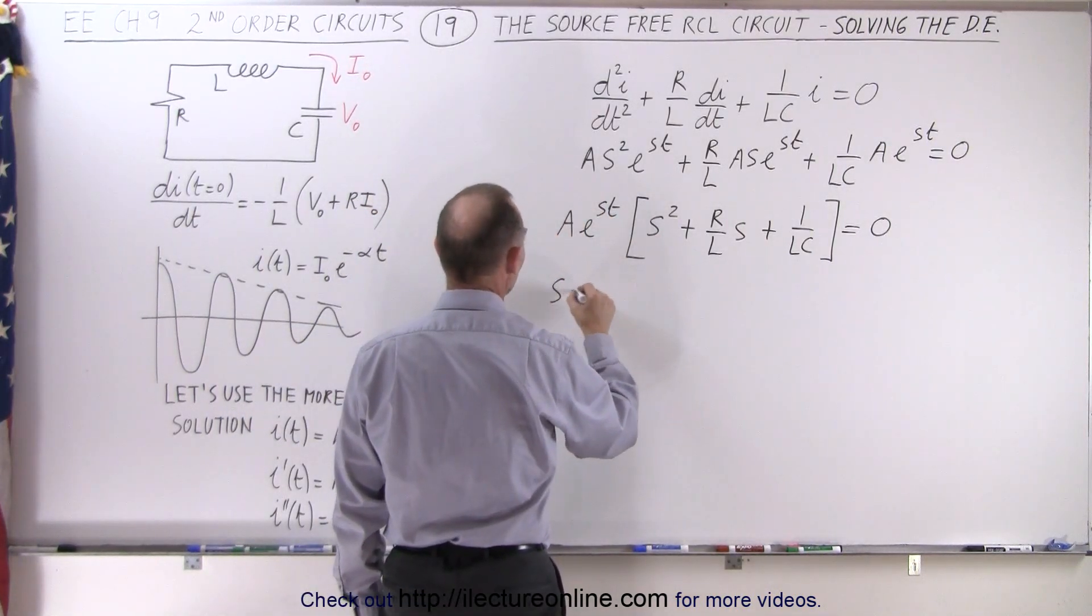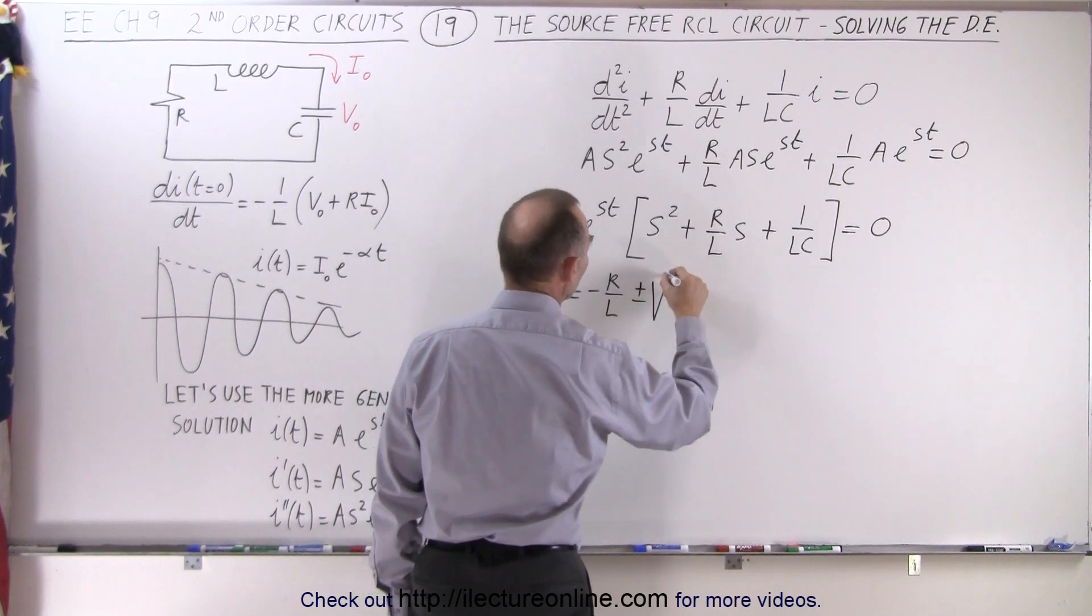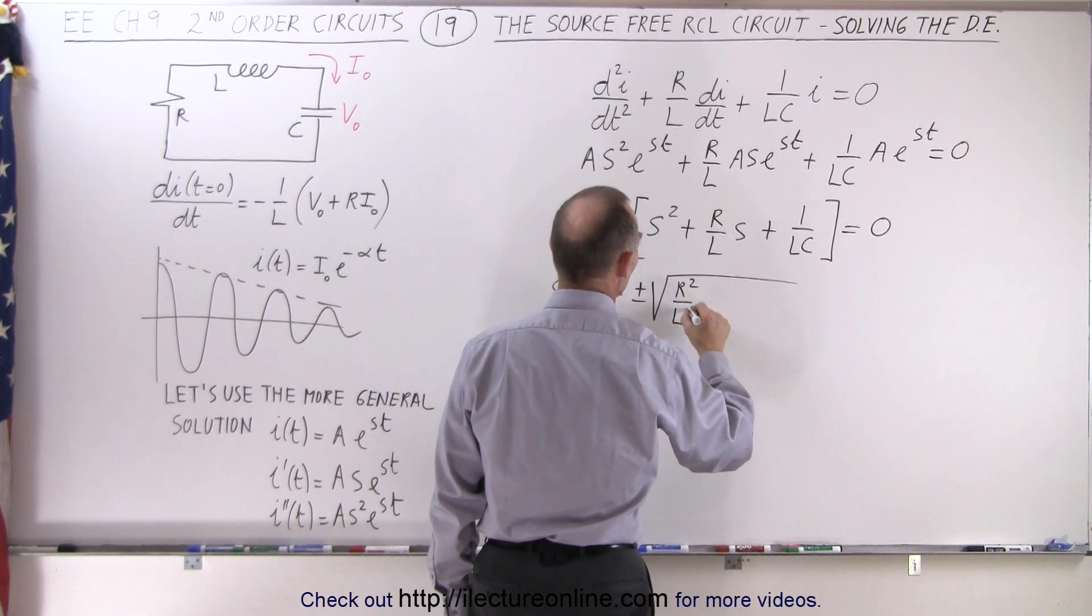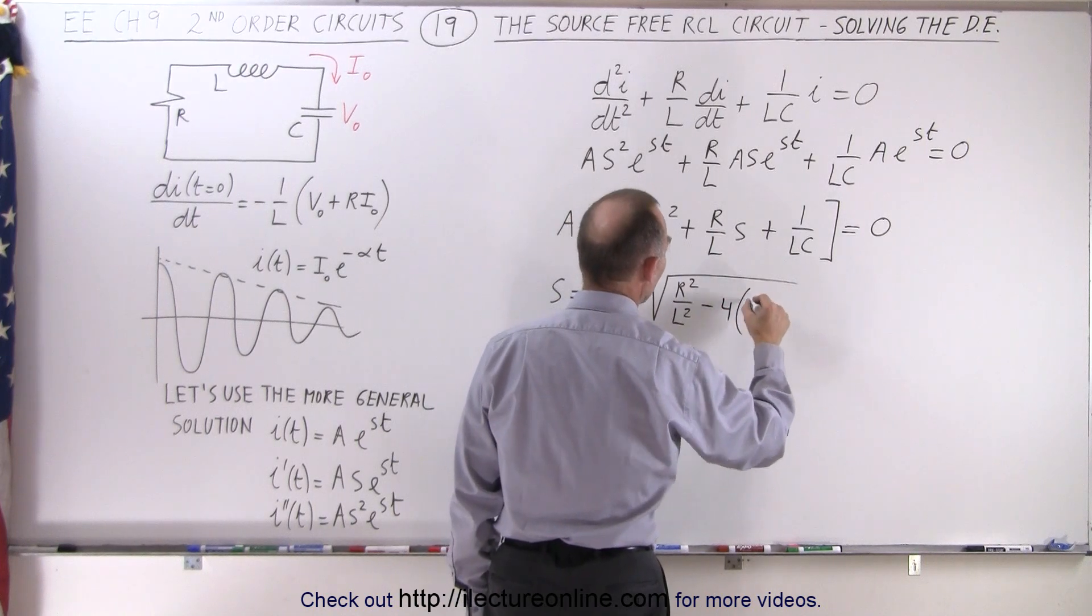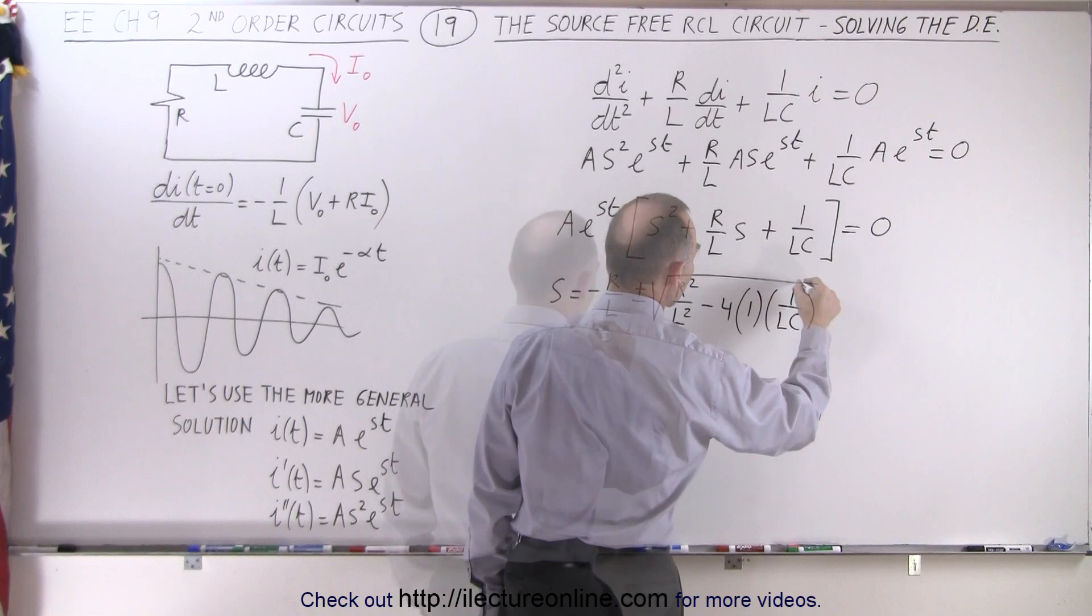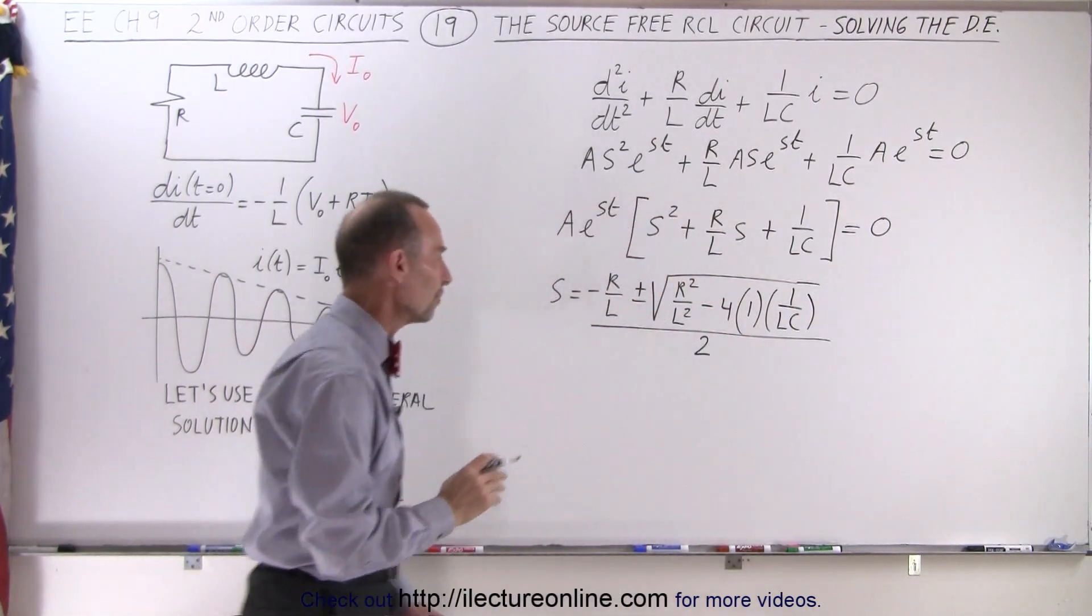We can say that s is equal to the negative r over l plus and minus the square root of this term squared, which is r squared over l squared, minus 4 times a, which is 1, times c, which is 1 over lc, divided by twice a, which will be 2 times 1, which is 2.